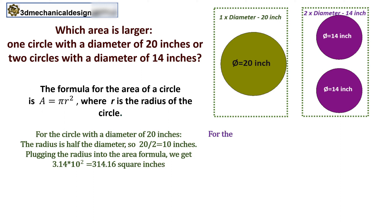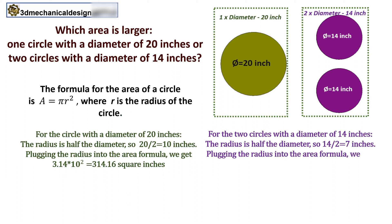For the two circles with a diameter of 14 inches, the radius is half the diameter, so 14 divided by 2 equals 7 inches. We get 3.14 multiplied by 7 squared, equals 153.94, multiplied by 2, equals 307.88 square inches.